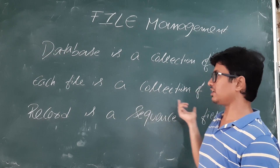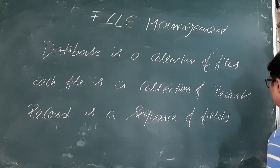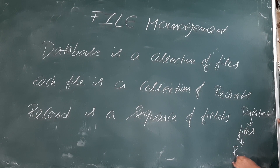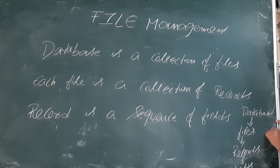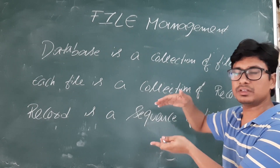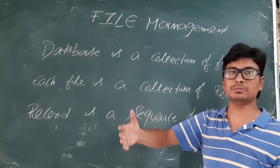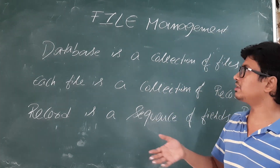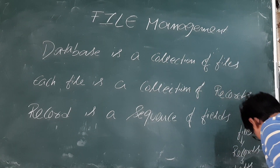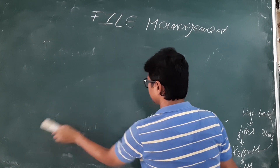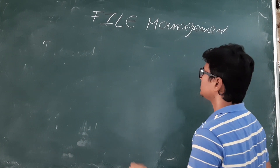A database is a collection of files, and each file is a collection of records, and a record is a sequence of fields. We know that records are stored in terms of blocks. In the main memory we have specific blocks, in cache memory we have lines, and in secondary memory we have pages in the virtual memory concept. Here we will study how the blocks are stored and how to effectively store the records in the file management concept.